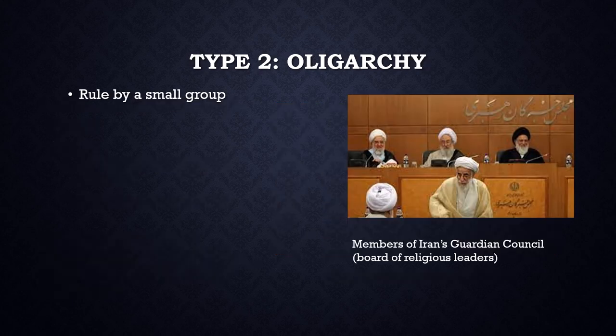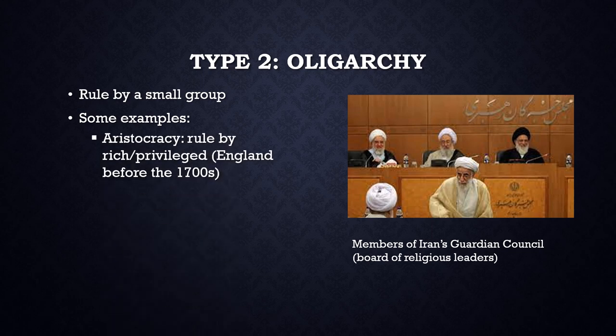The second type of government is an oligarchy. Oligarchy means rule by a small group of people. Power is shared here, rather than being concentrated in one person as it is in an autocracy. Oligarchies are very common forms of government and there are many different varieties. For example, aristocracy, which is ruled by the rich and privileged of a society. A good example are the wealthy landowners referred to as lords who ruled England before the 1700s. While England still grants some special ceremonial privileges to descendants of these lords, this group does not have the power to make laws anymore.